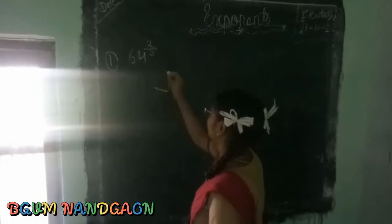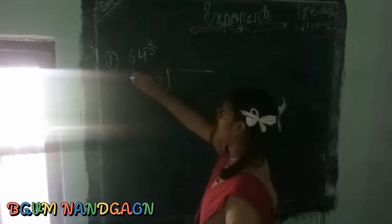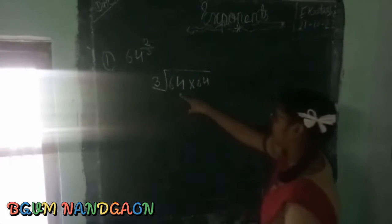We will take 3 as the root and 2 as the power, 64 into 64. We will take the factor of 64.